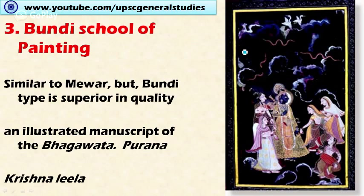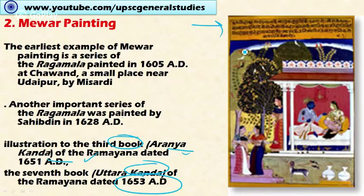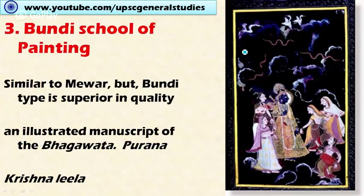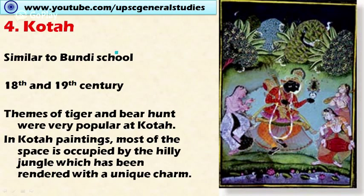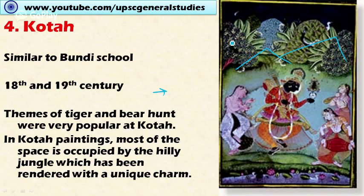The Bundi school of painting has similar characteristics to Mewar painting but is considered superior in quality. An illustrated manuscript of the Bhagavata Purana is made under the Bundi school, and Krishna's Leela is increasingly depicted. Next is the Kota school, which is similar to Bundi and flourished during the 18th to 19th century in the Kota region of Rajasthan. The important theme under the Kota school is tiger and bear hunting. Most of the painting space is occupied by hilly jungle, giving it a unique charm.